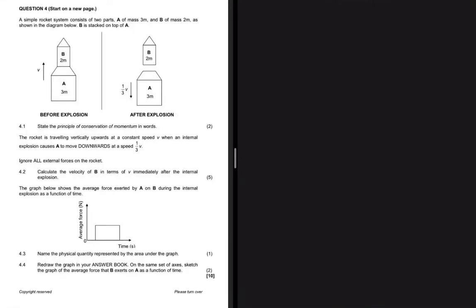Question 4c is a simple rocket system consisting of two parts. Part A has mass 3m kg, and we have that written down - the mass is 3m kg or some unit.